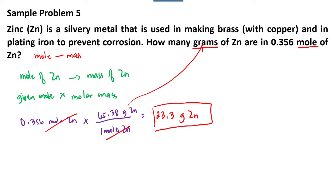Okay, so there are 23.3 grams of zinc in 0.356 mole of given zinc. So this is a mole to mass problem.